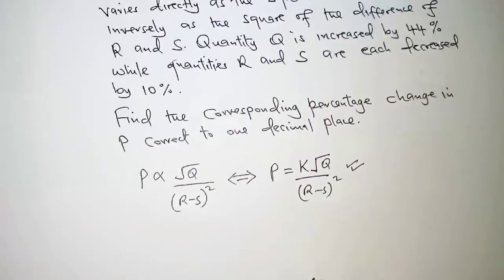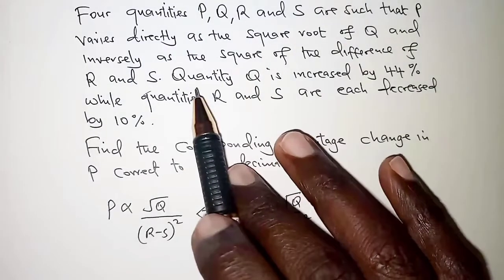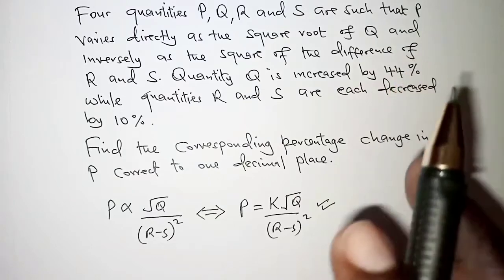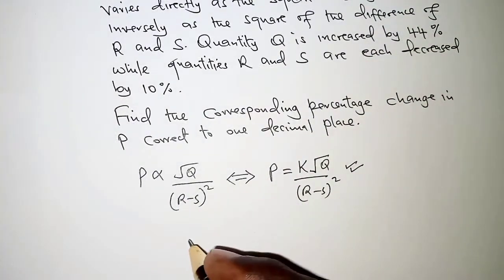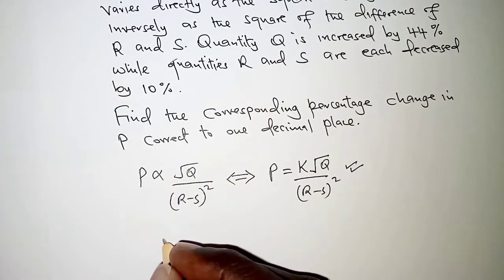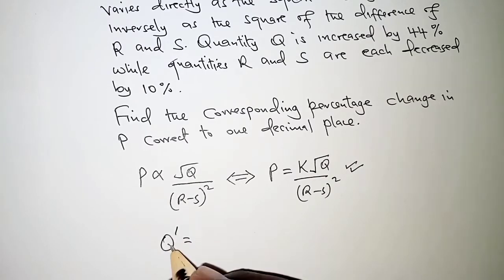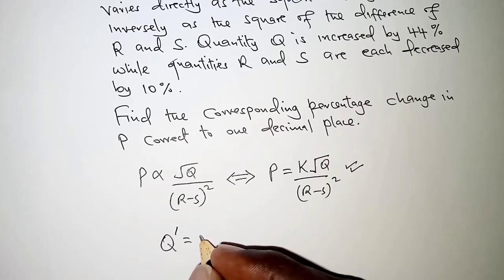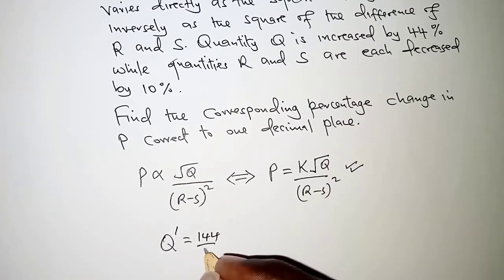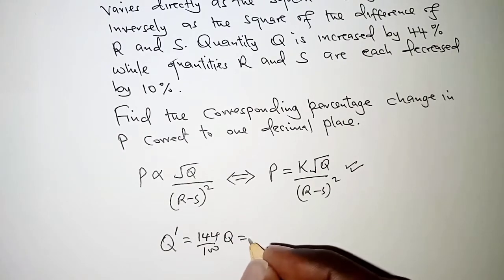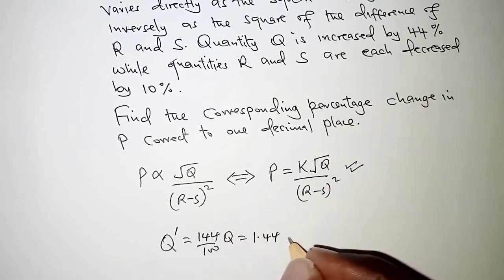We are told that Q is increased by 44%. So when Q is increased by 44% that means we will have a new value of Q. Let's represent it by Q prime. So Q is increased by 44%, so we will have 144 over 100 of Q, which is just 1.44 Q.